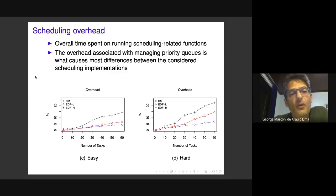For scheduling overhead, they perform quite differently, mainly for hard task sets. EDF-L, the version using lists to implement the task queue, performs between rate monotonic scheduling and the heap-based version.